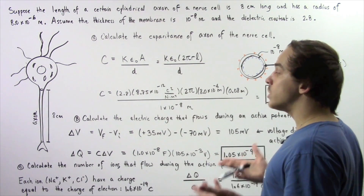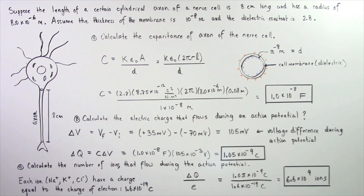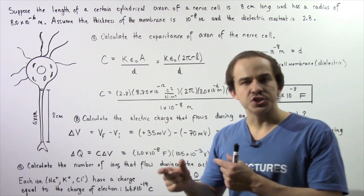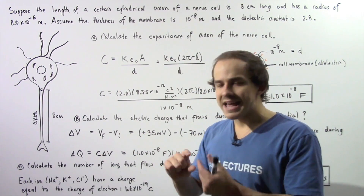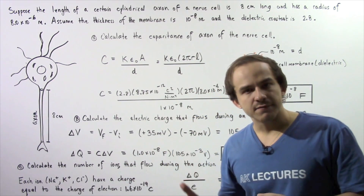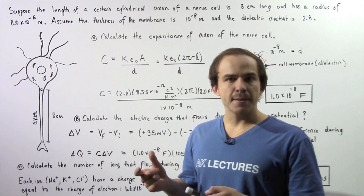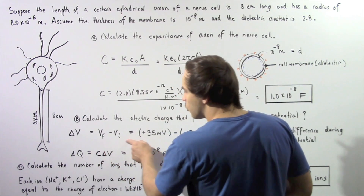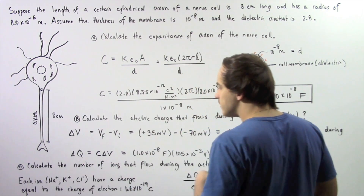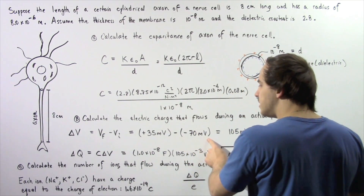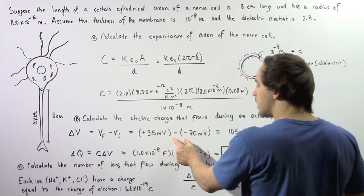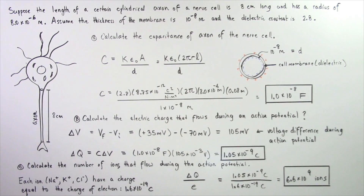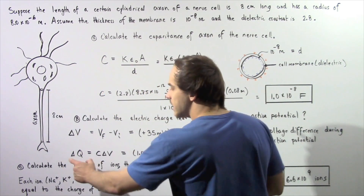Moving on to Part B, we want to calculate the electric charge that flows during an action potential. An action potential takes place when the voltage changes by a certain quantity. Right before an action potential, the voltage is about negative 70 millivolts, and right after it takes place, it's about positive 35 millivolts. The change in voltage is V final minus V initial: 35 minus negative 70 gives us 105 millivolts. This is the voltage difference during an action potential.